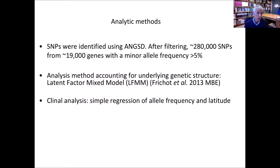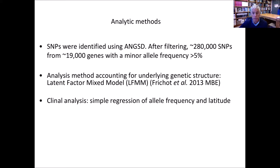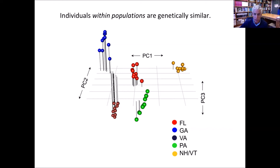Perhaps there are traits we haven't thought about that are nonetheless under selection. We identified about 280,000 SNPs from exome data in 19,000 genes. We used a latent factor mixed model — an approach that looks for correlations between genotypes and environmental variables while accounting for the correlated history of populations. We also looked at genes that show clinal patterns in allele frequency. In a PCA of all SNPs, populations hold together, and each population is distinct. Differentiation among populations doesn't correlate with geographic distance, so genes that do show clinal variation really stand out and help identify genes under selection.